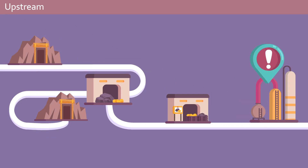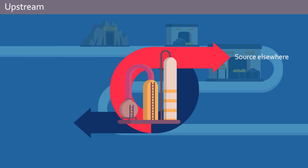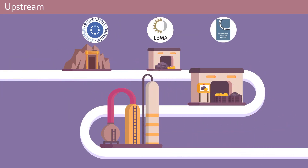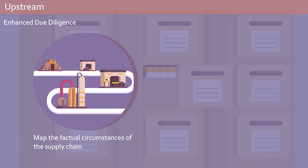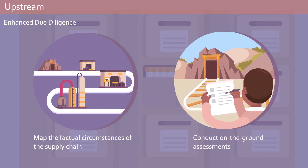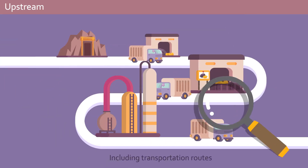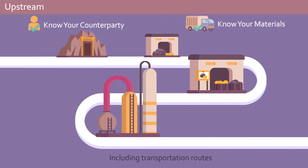If a supplier's actions or materials raise a red flag, you have two choices: source elsewhere, or conduct enhanced due diligence to source responsibly from high-risk areas — which we encourage you to do. To conduct enhanced due diligence, upstream actors will need to map the factual circumstances of the supply chain and conduct on-the-ground assessments. First, you'll identify every actor in your supply chain all the way back to the mines and conduct Know Your Counterparty on all of them. Every transaction will need to come with complete traceability documentation.